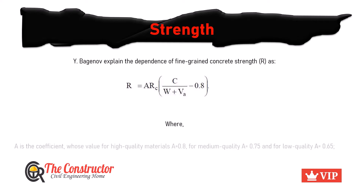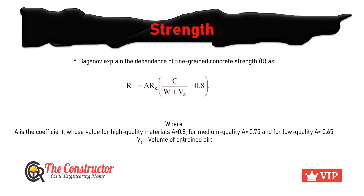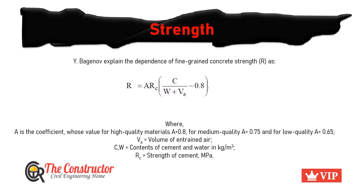In the formula, VA is the volume of entrained air. C and W are the content of cement and water respectively in kilograms per cubic meter. A is a coefficient whose value for high quality materials is 0.8, for medium quality is 0.75, and for low quality it is 0.65. Rc is the strength of the cement used for the manufacture of fine grain concrete in megapascals.